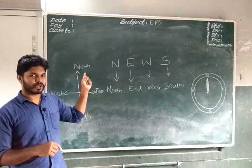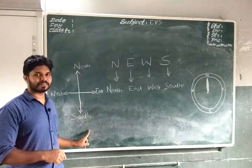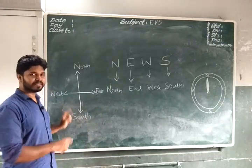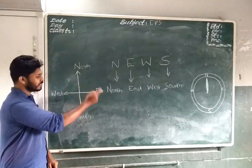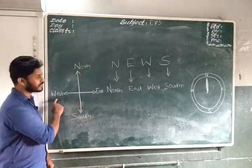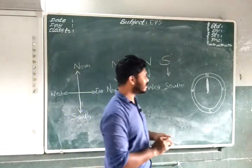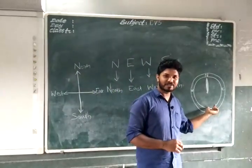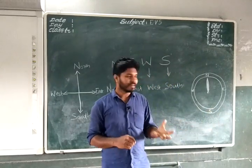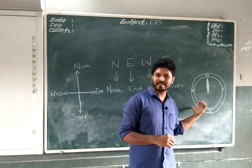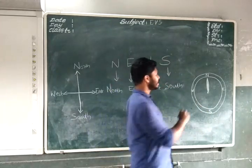Once more — what are they? North, East, South, and West. These are the four directions. For finding these directions, we have an instrument whose name is Compass. What is it? Compass — C-O-M-P-A-S-S.